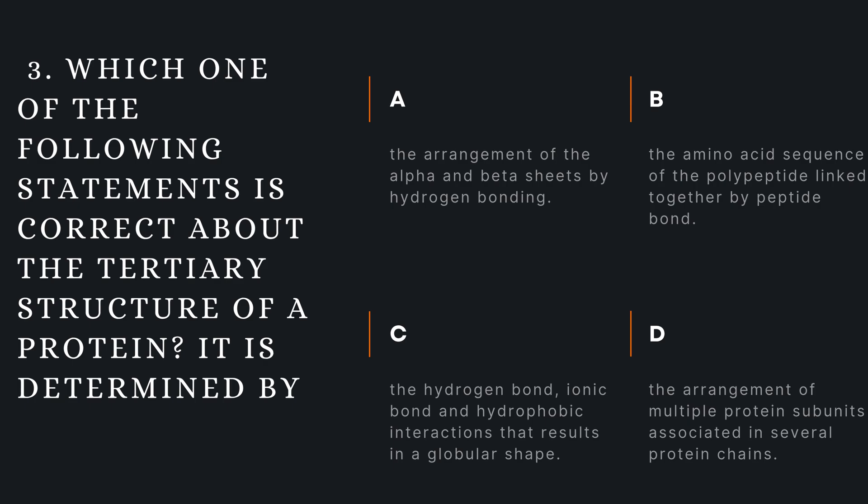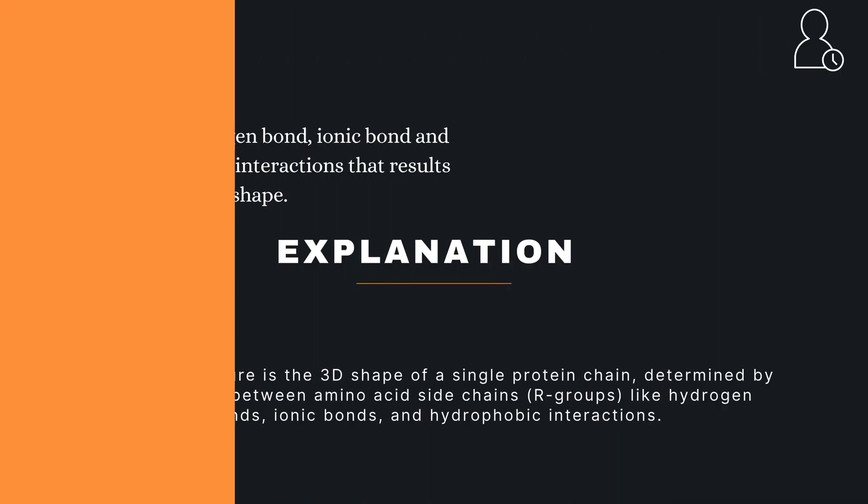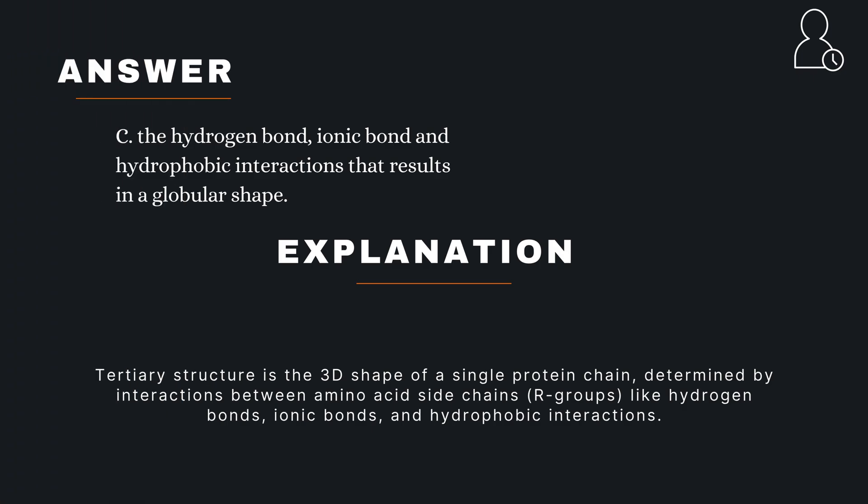Question 3. Which one of the following statements is correct about the tertiary structure of a protein? It is determined by: A — the arrangement of the alpha and beta sheets by hydrogen bonding; B — the amino acid sequence of the polypeptide linked together by peptide bond; C — the hydrogen bond, ionic bond and hydrophobic interactions that results in a globular shape; D — the arrangement of multiple protein subunits associated in several protein chains. The correct answer is C — the hydrogen bond, ionic bond and hydrophobic interactions that results in a globular shape.